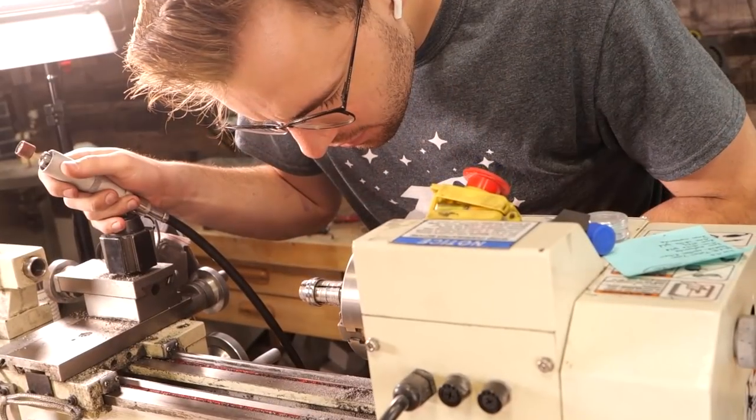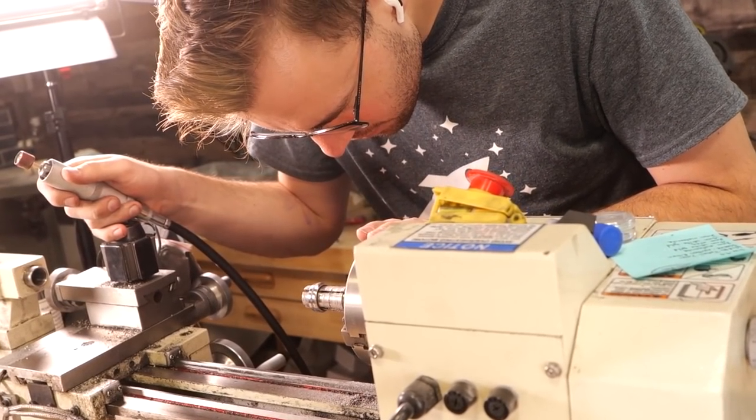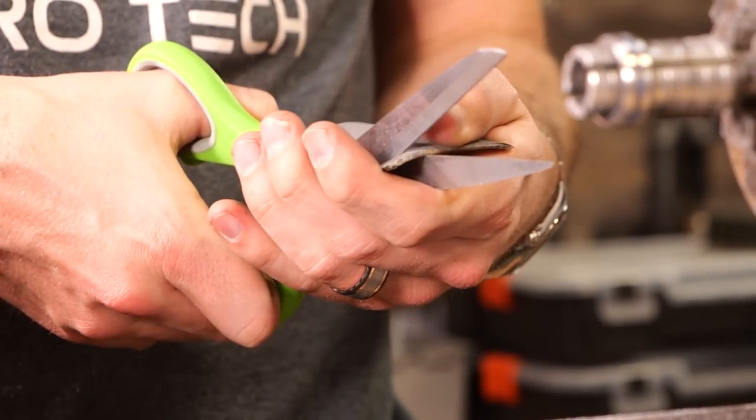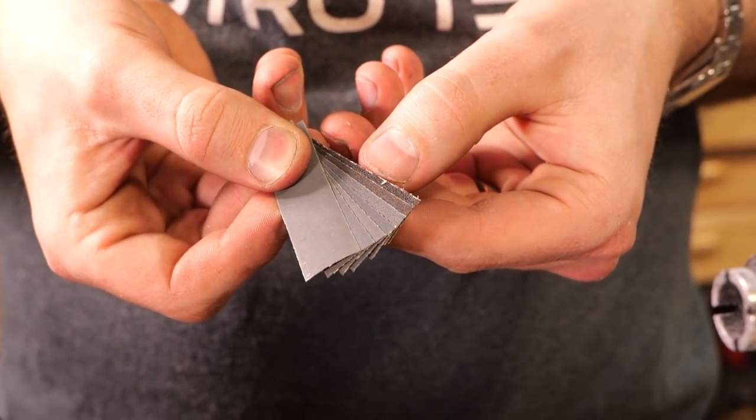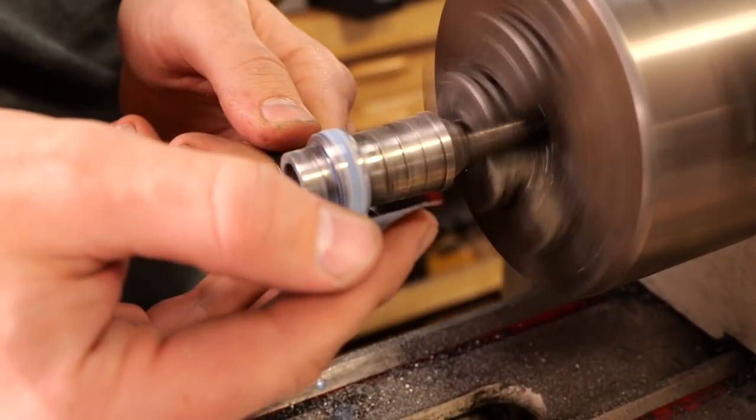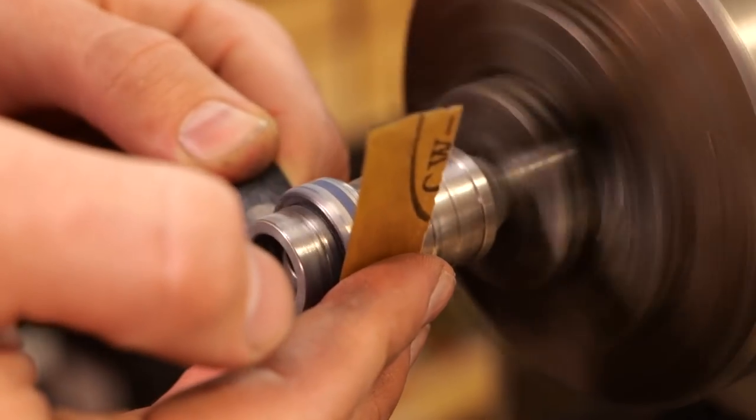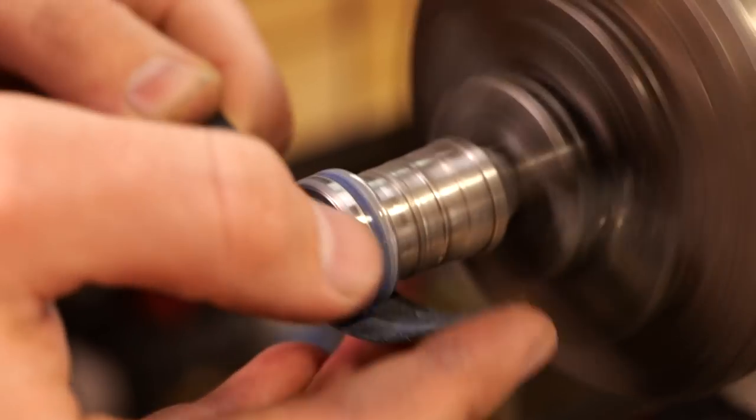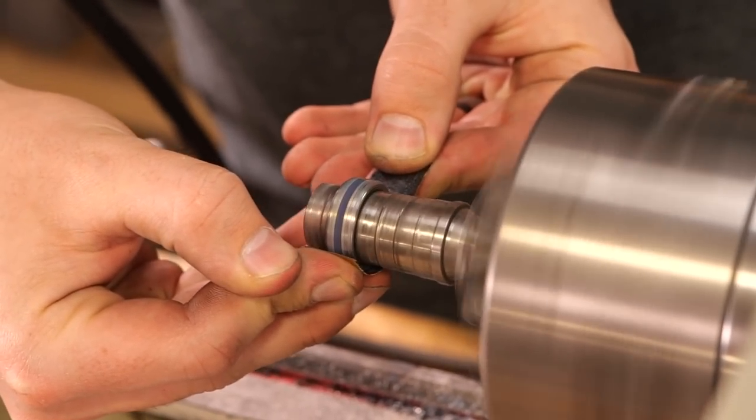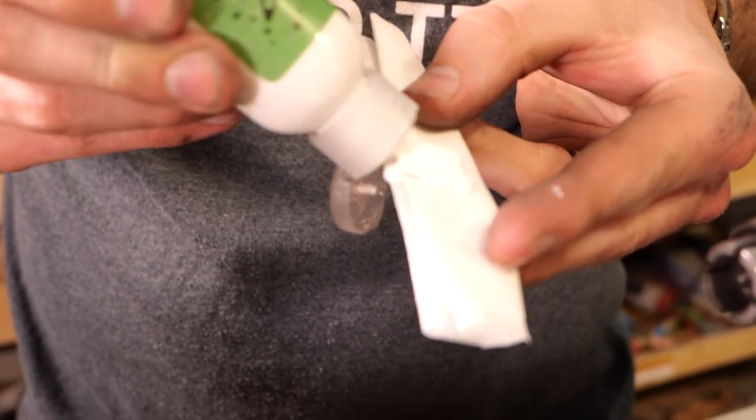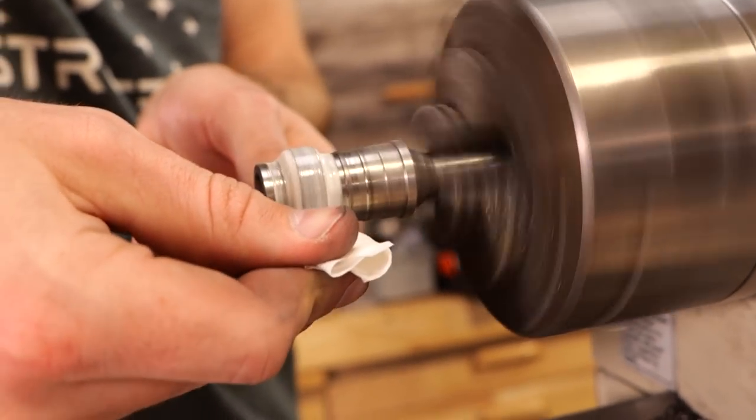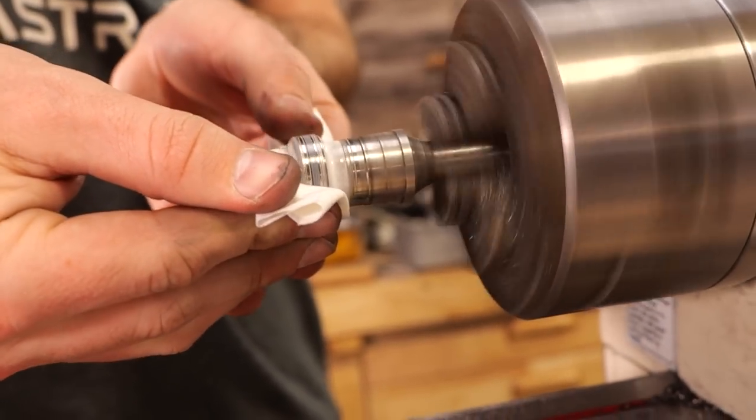All right, we're getting really, really close. We've just got two more steps. We've got to do sanding and polishing on the ring, and then we've got to go through the etching process for the meteorite. The sanding is very straightforward. I start off with a 220-grit sandpaper and work my way up through progressively finer sandpapers, all the way up to about 1500. And then I finish it off with our Astrotech all-in-one polish. I repeat these steps for both the outside and the inside of the ring.